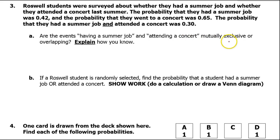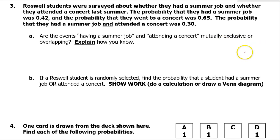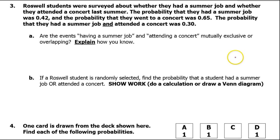For example, you cannot be both a freshman and a junior in high school at the same time, so those events would be mutually exclusive. On the other hand, you can be a freshman and a girl at the same time, so the events of being a girl and being a freshman are overlapping.